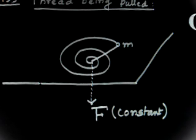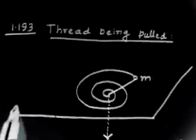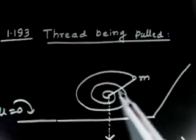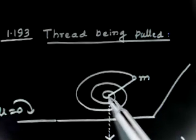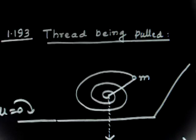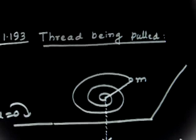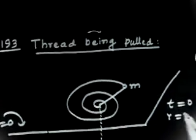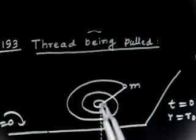This is a light non-stretchable thread. Problem 1.193: a small object of mass m tied to a non-stretchable thread over a smooth horizontal plane — so this plane is smooth, mu equals zero. The object of mass m is tied through a thread, which passes through a hole in the table. The initial radius is r₀, so at t = 0, r = r₀.